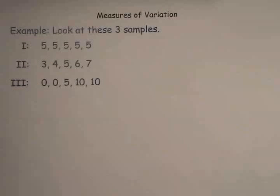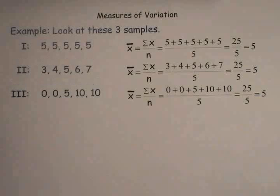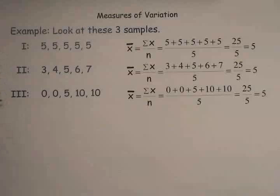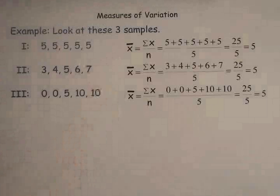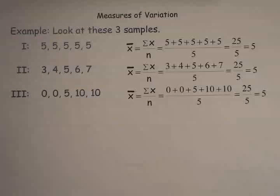We want to look at some formal definition of that measure of variation or spread. But before I actually do that, I want to make one comment: although these sets of numbers have different amounts of spread or variation, they all have the same mean. If you calculate the mean for all those numbers, they're all equal to five.